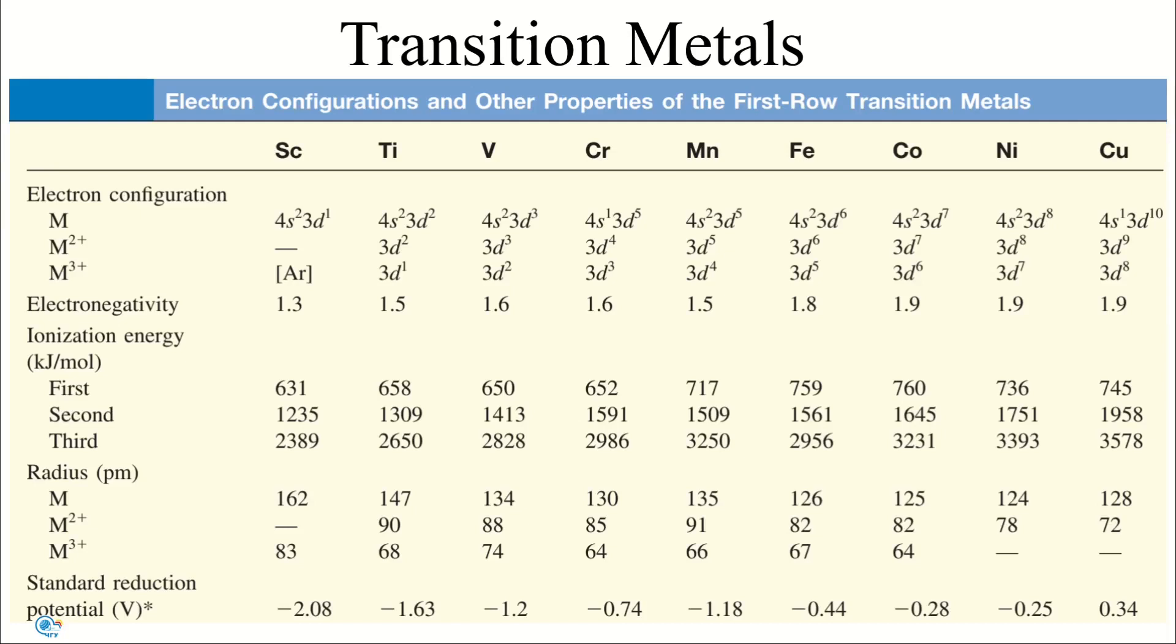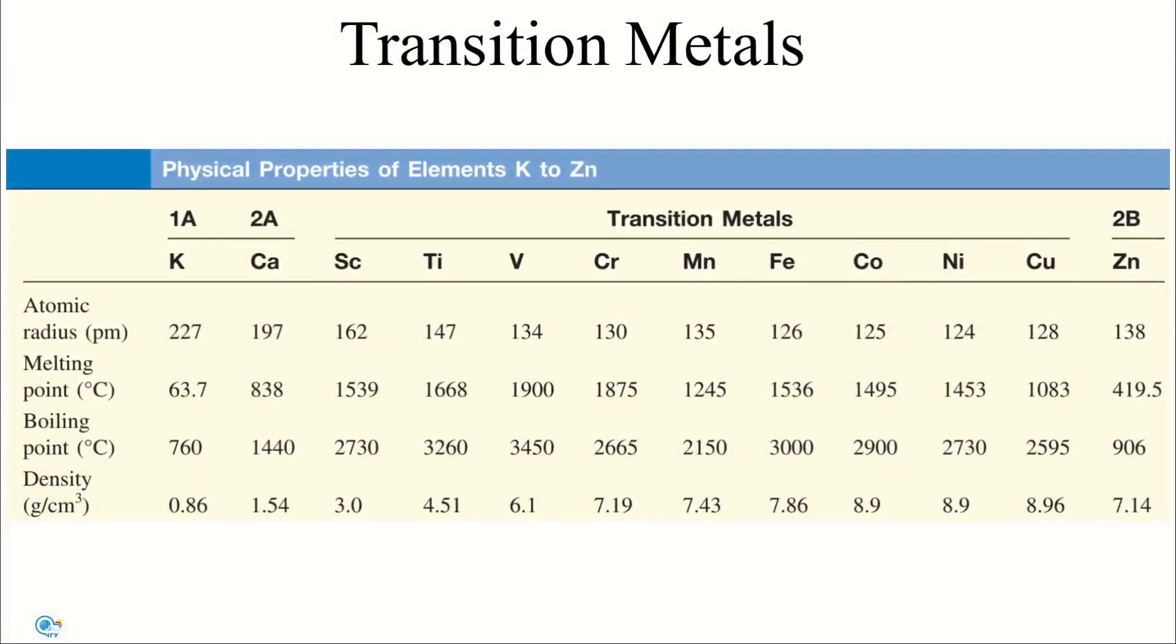Therefore, transition metals have higher densities, higher melting points and boiling points, and greater heats of fusion and vaporization than the alkali and alkaline earth metals. You can see it in this table: the atomic radii, melting and boiling points, and density of potassium and calcium and transition metals.